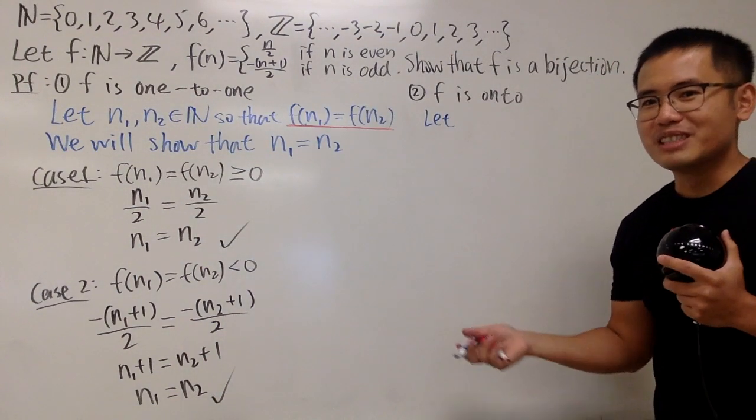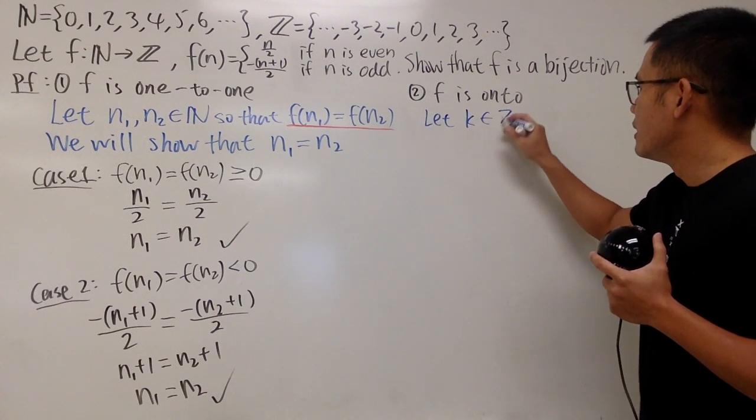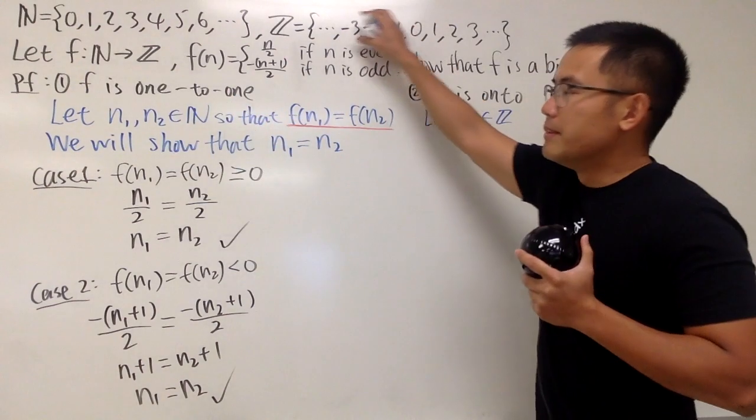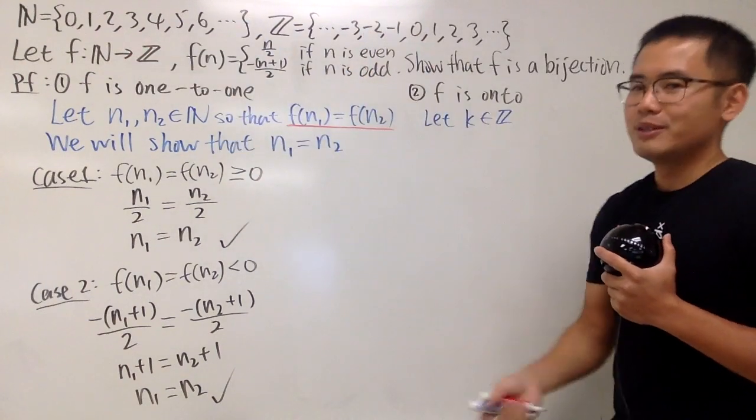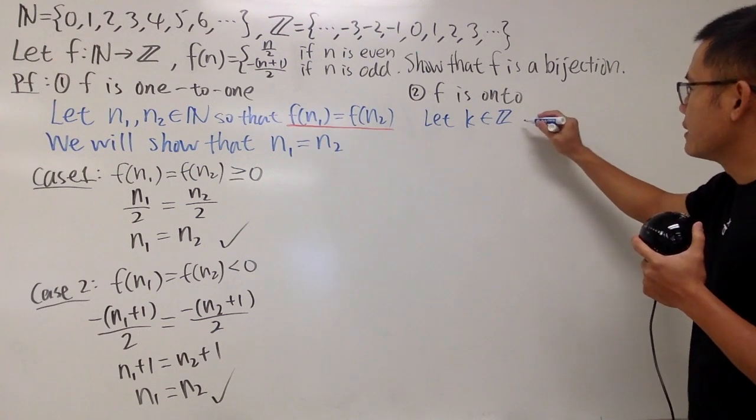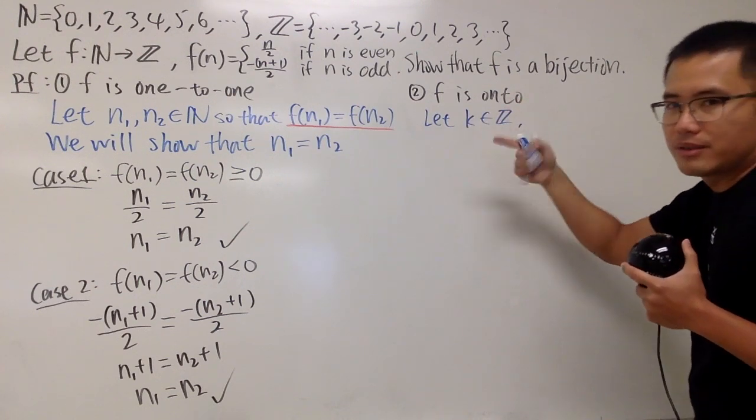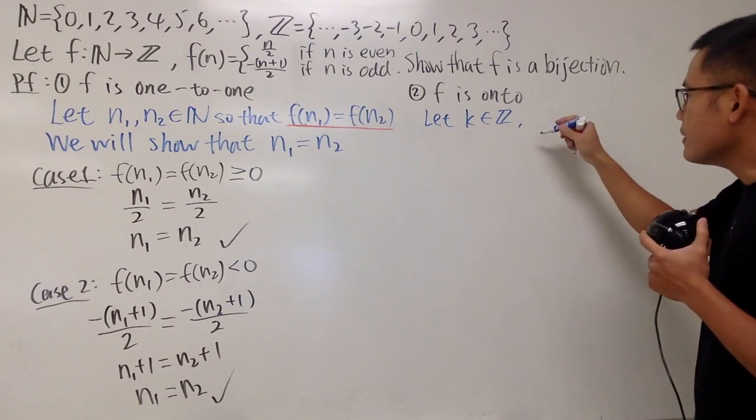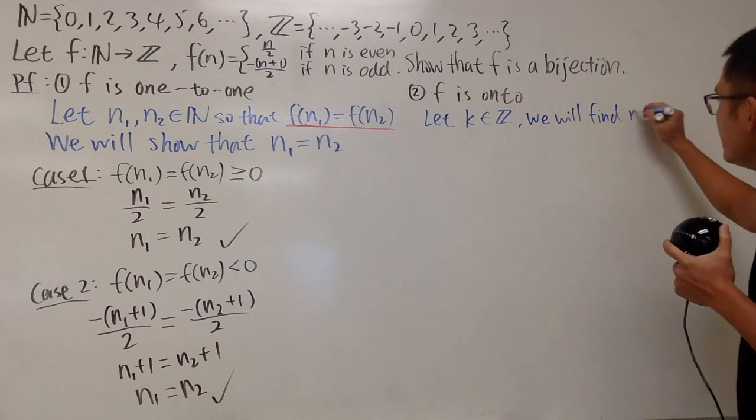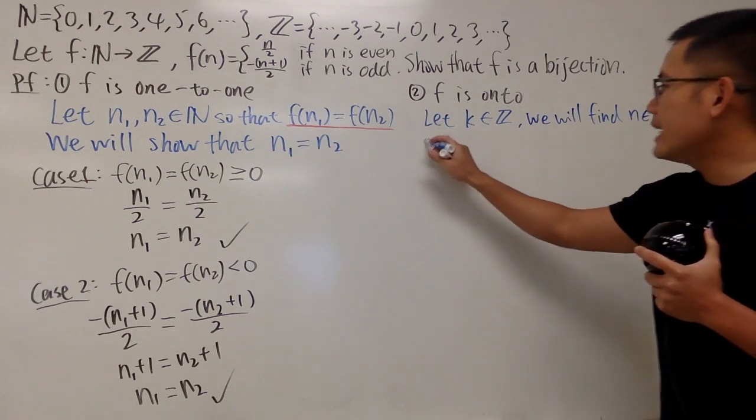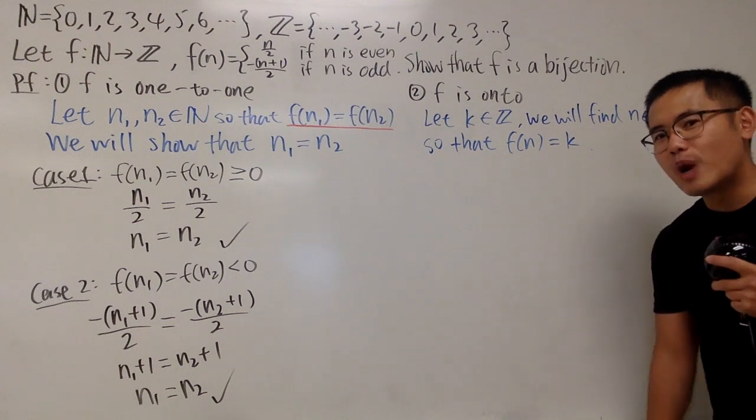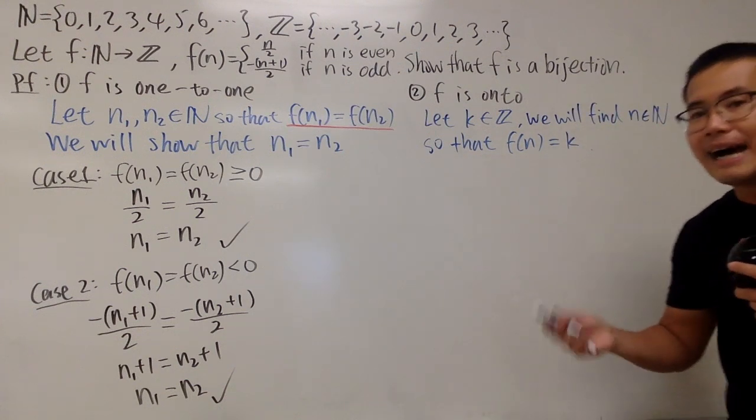k in Z, which is this set. Well, onto means that for all the elements right here, somebody from the first set will hit the elements here. So onto will fulfill everything. There's no leftovers. When you pick k in Z, we have to find for all, I should say for all, but it doesn't really matter. It depends on the language that you want to use. For all k in Z, well, that k in Z, we will find an element in the first set.